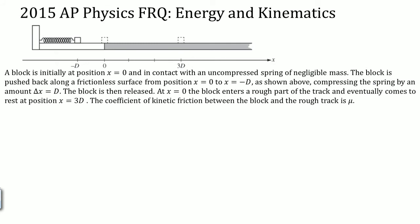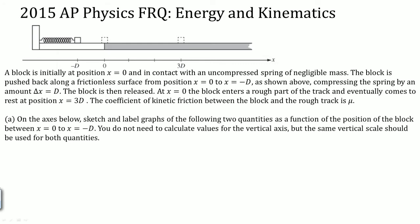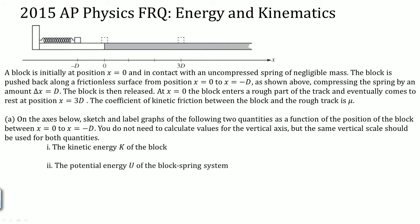Let's look at a traditional AP Physics 1 free-response question from the 2015 exam. The first question asks: on the axis below, sketch and label graphs of the kinetic energy and the potential energy as a function of the position of the block between x equals zero and x equals negative d. You do not need to calculate the values — just the kinetic energy and the potential energy.